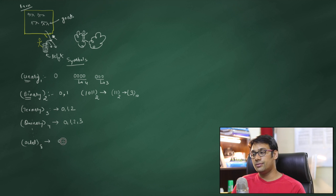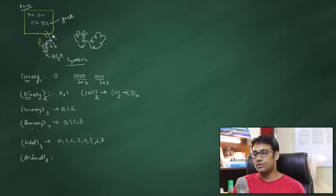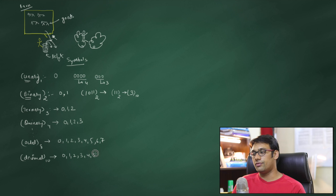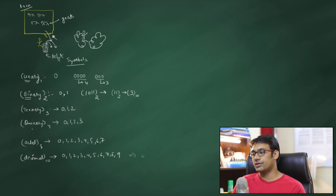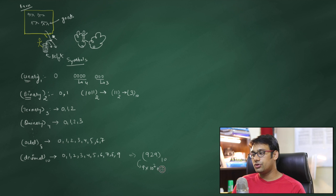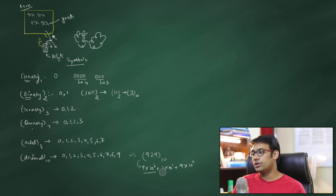The most popular number system used in daily life is the decimal number system with base ten, having ten symbols: zero through nine. For example, the combination 9, 2, 9 in base ten is evaluated as 9 × 10² + 2 × 10¹ + 9 × 10⁰, which equals nine hundred and twenty-nine.